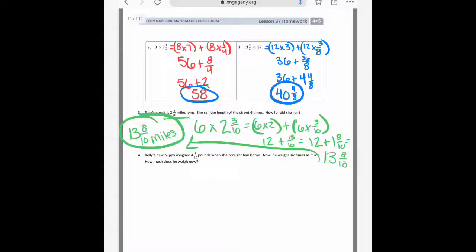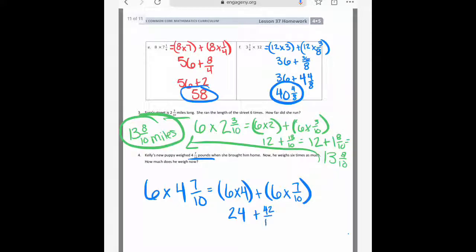Kelly's new puppy weighed 4 and 7/10ths pounds when she brought him home. Now, he weighs 6 times as much. How much does he weigh now? So, I'm going to take 6 times 4 and 7/10ths. So, it's going to be the same thing as saying 6 times 4 and 6 times 7/10ths. 6 times 4 is going to give you 24. 6 times 7/10ths is going to give you 42/10ths. And 42/10ths is the same thing as 4 and 2/10ths. So, all together you get 28 and 2/10ths pounds is how much the puppy weighs.